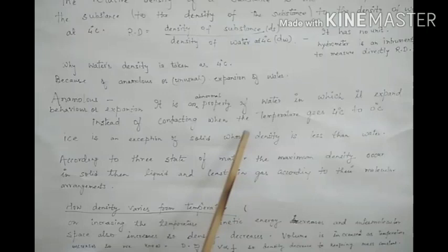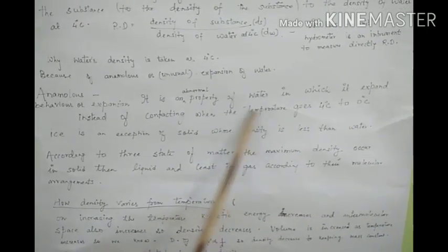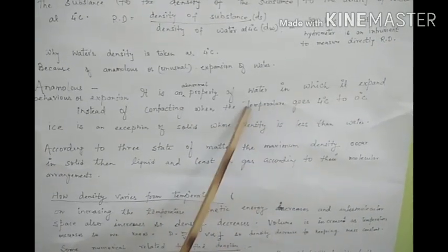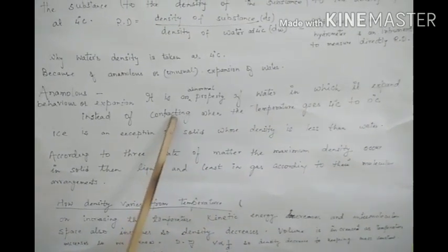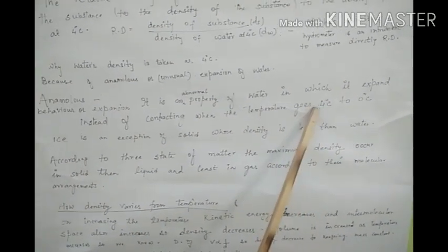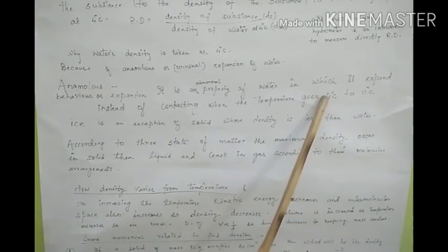You know that when temperature increases, the substance also increases its intermolecular space. But in this case, it contracts, so when at 4 degrees Celsius, the maximum density of water is 1 gram per centimeter cube.